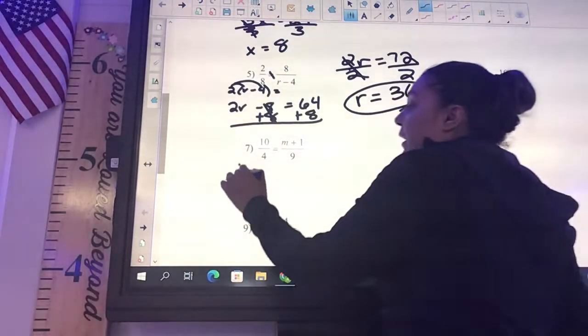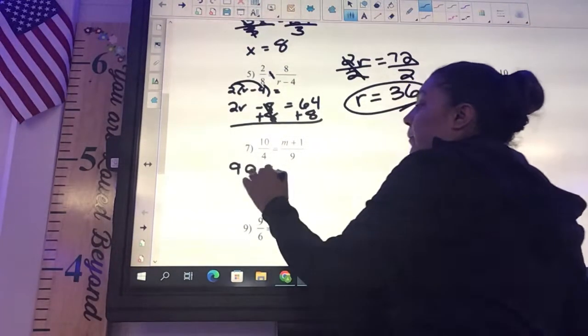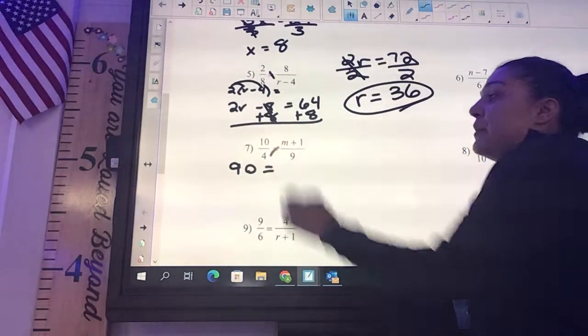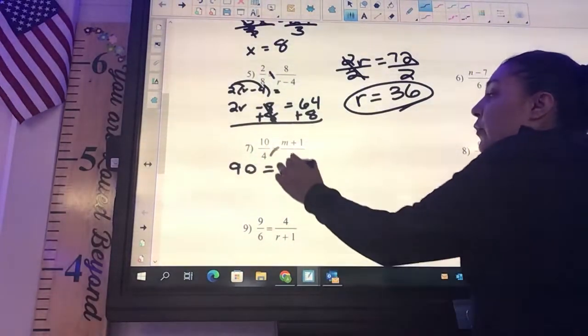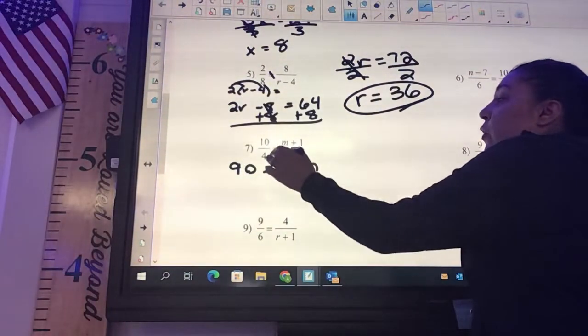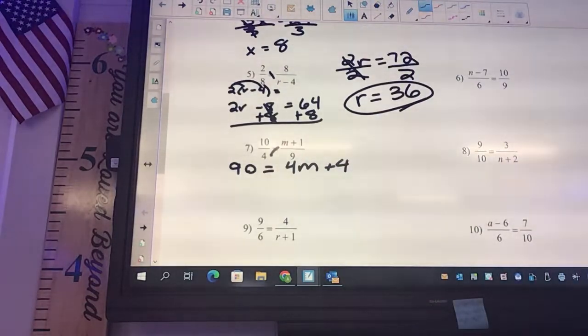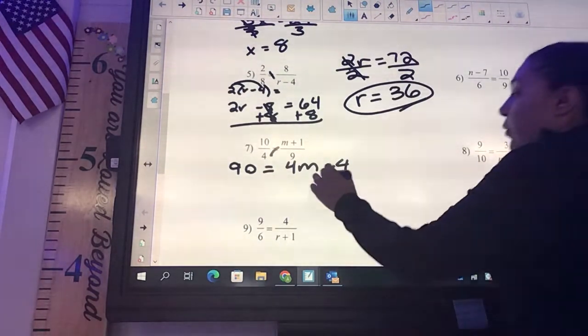10 times 9 is going to be 90. And then for the other side, we got 4 times m, 4m. 4 times 1, 4. What needs to move first? Subtract 4. Subtract 4.